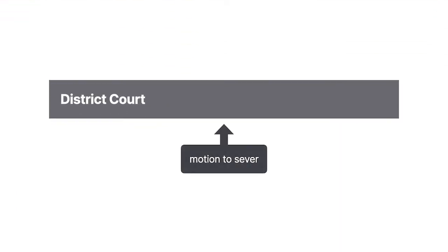Ciba filed a motion to sever, asking the court to split the trial into five separate trials. It argued that a joint trial would be prejudicial because the jury would get confused by facts specific to individual plaintiffs, and that consolidating the cases would give the impression that contamination was widespread.